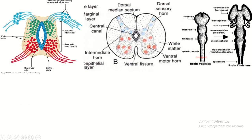This is the cross-section of the adult spinal cord. This is the central canal, and this is the ependymal-lined central canal. This is the inner gray matter, and this is the outer white matter.